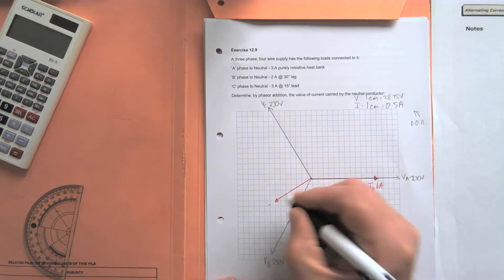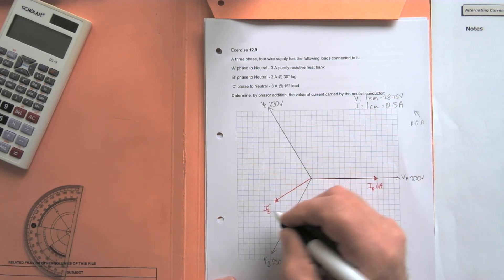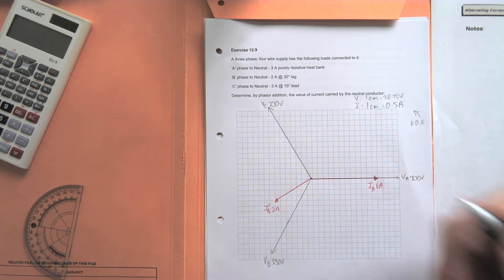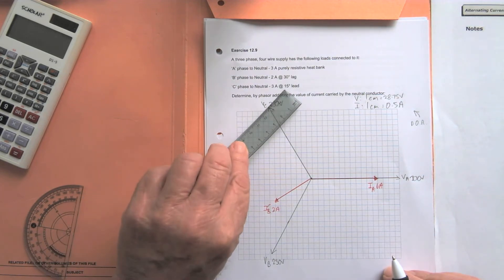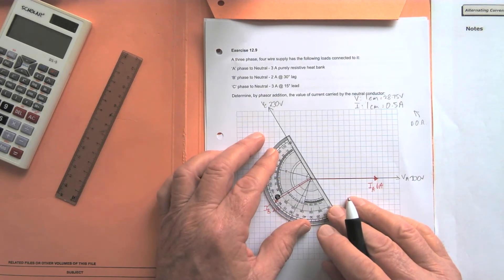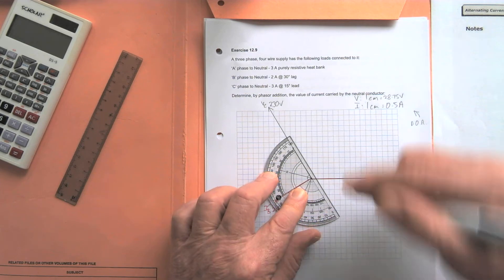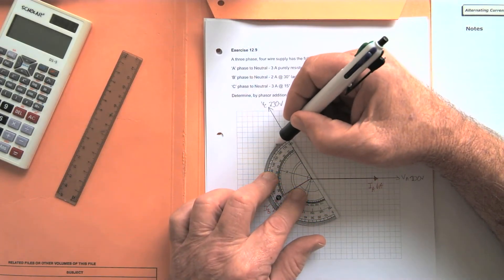Okay, so there's IB at two amps. And IC was three amps leading the B phase by 15 degrees. We go along the C phase, sorry, then we go under there and an angle 15 degrees leading would be up there.